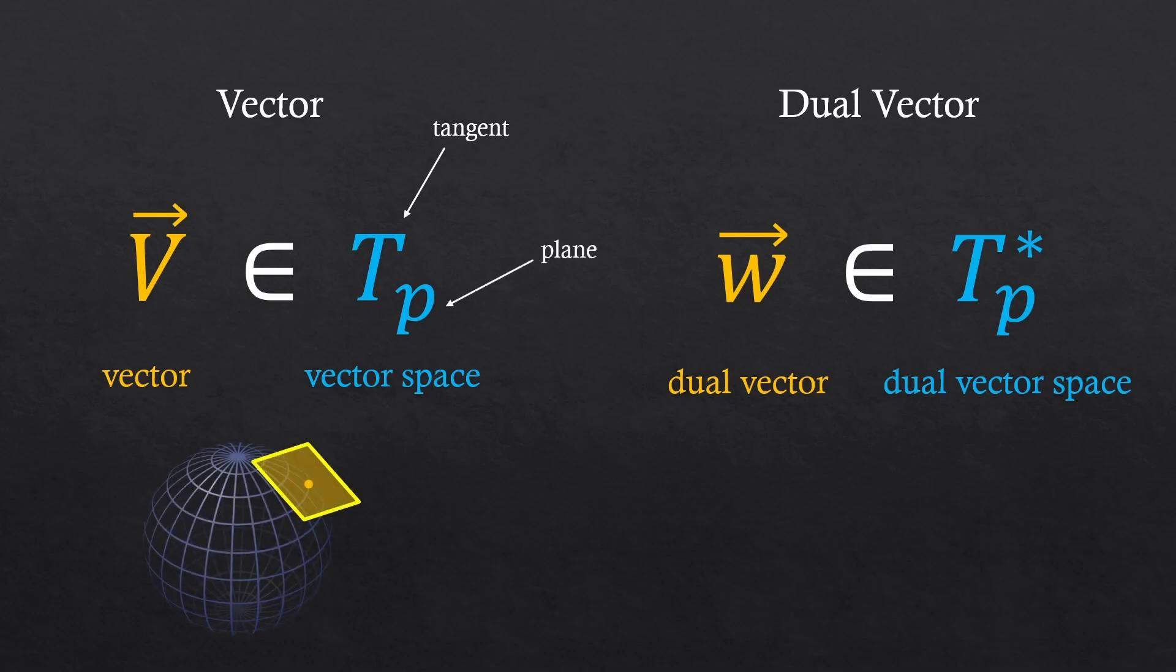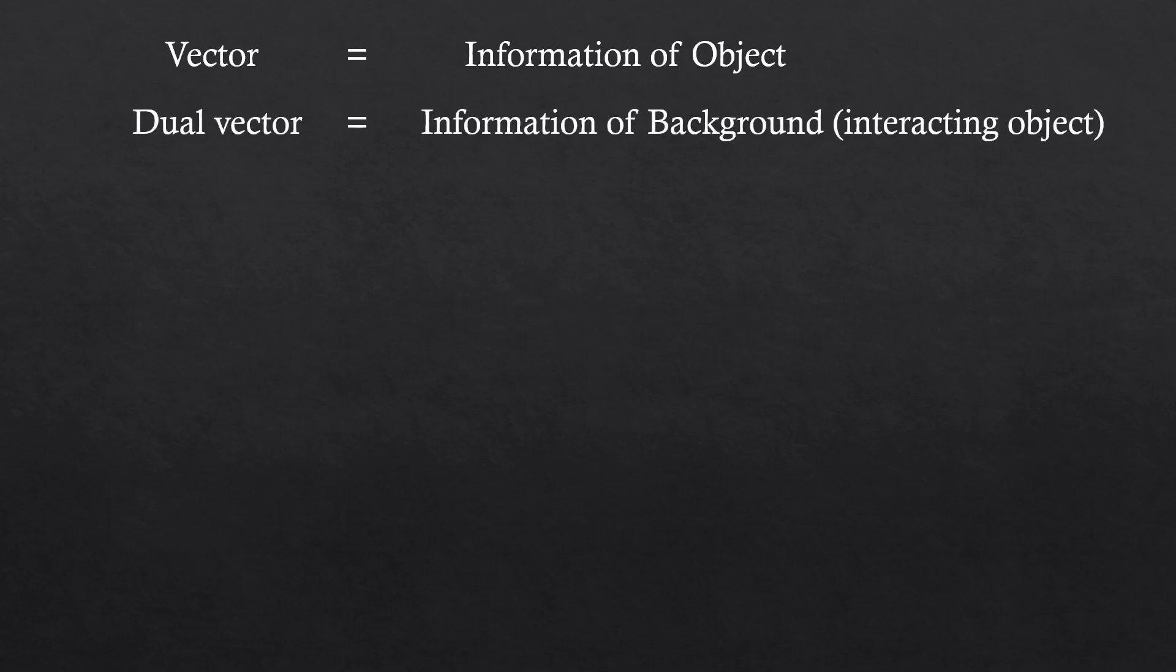So basically a tangential plane. Dual vector space has an asterisk, which means cotangent. I'll go straight to the point. When vector has information of an object, dual vector has information of the object's background, or information of an interacting object.